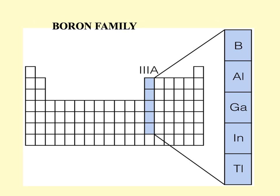Then let's move to the 3A family, called the boron family because it begins with boron. Remember that boron is a metalloid, and aluminum, which is placed here, is the most abundant metal on earth.